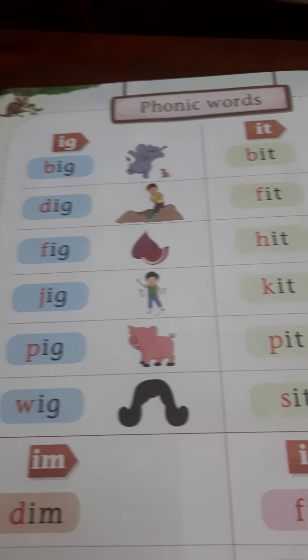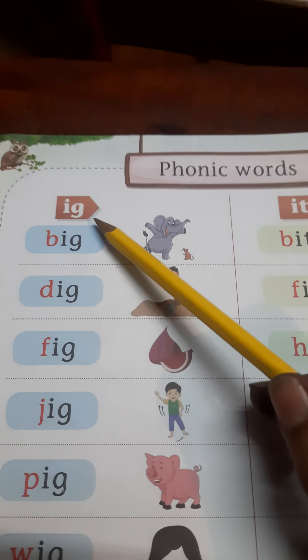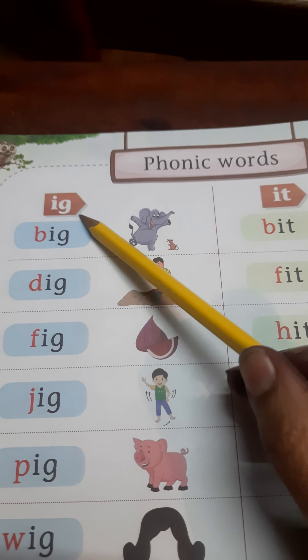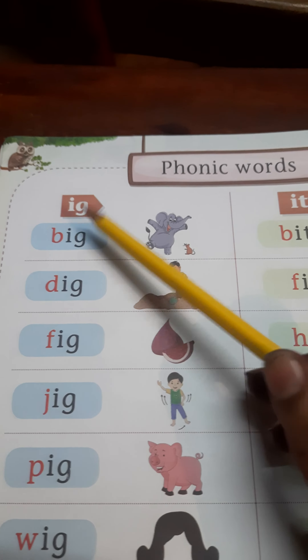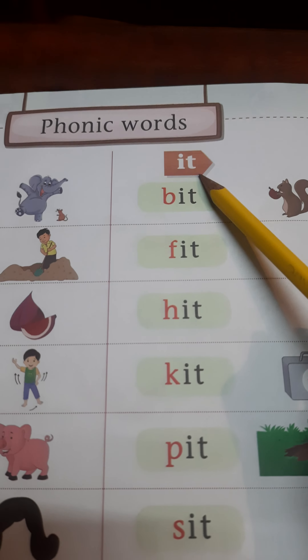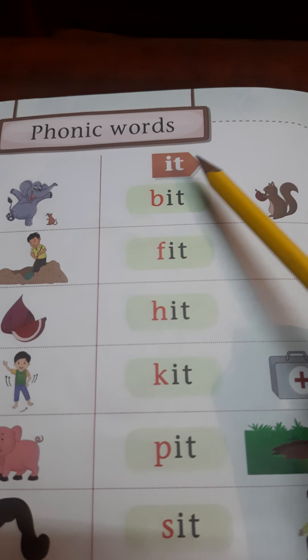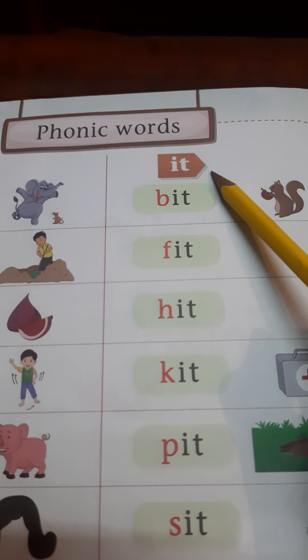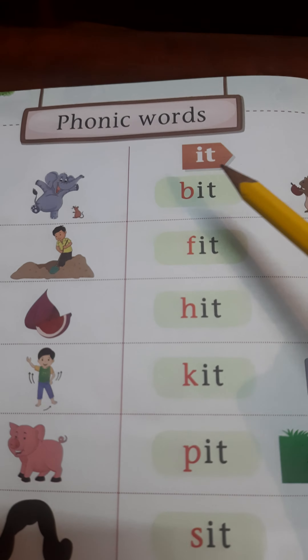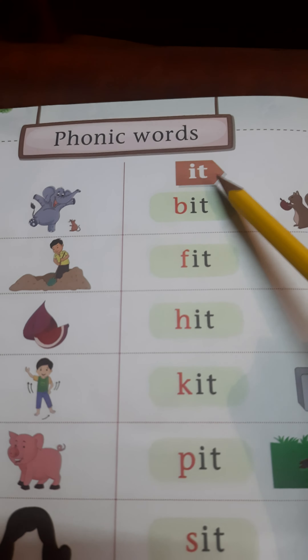Okay, so this is E and this is G. Ye kya bana? EG. If we put P in front of E, it will become IT. Read karo mere saath: E-ta. It.